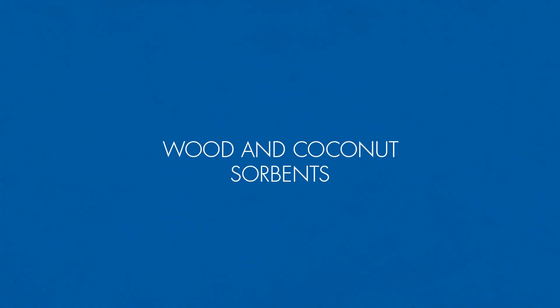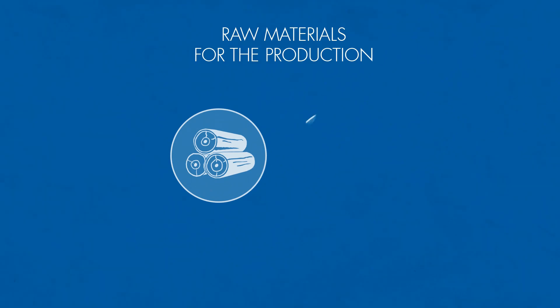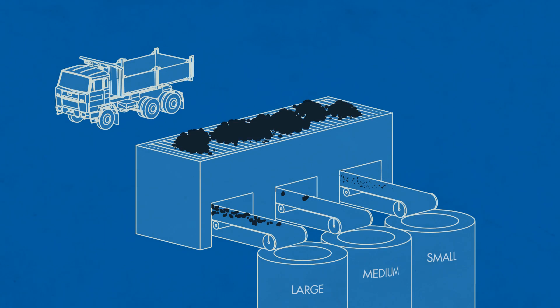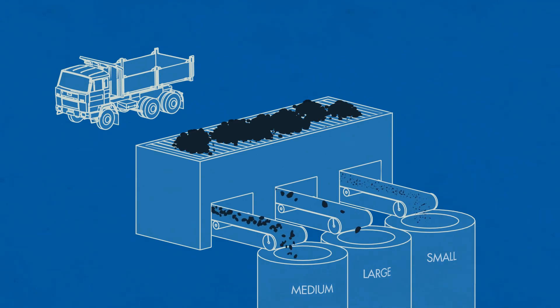Wood and coconut sorbents. Pyrolyzed wood and coconut shells are raw materials for the production of this type of sorbents. The technological process of manufacturing activated carbons on wood and coconut bases includes the following stages.